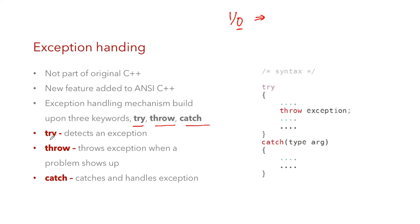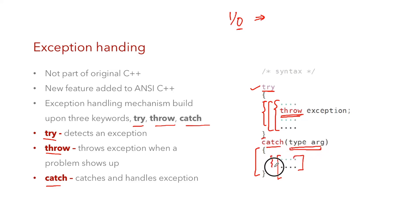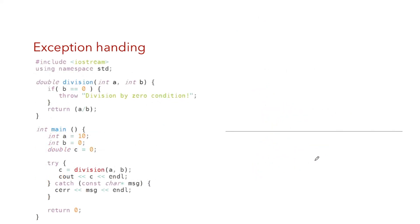The try keyword detects an exception during your program — it ensures detection of whatever exception can occur in the code block specified inside its curly braces. The throw keyword throws an exception when a problem is detected by the try block. Finally, the catch block captures whatever exception is thrown by the throw keyword, and then you can perform certain steps inside it. So to revise: try detects the error, throw throws the exception, and catch handles it.